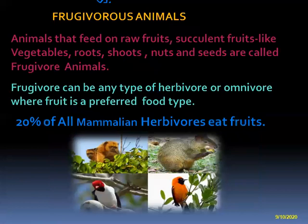Frugivorous animals — what are frugivorous animals? Animals that feed on raw fruits, succulent fruits like vegetables, roots, shoots, nuts, and seeds are called frugivorous animals. These can be any type of herbivores or omnivores where fruit is the preferred food type. 20% of all mammalian herbivores eat fruits — they come under frugivorous animals. You can see the picture children — these are frugivorous animals.